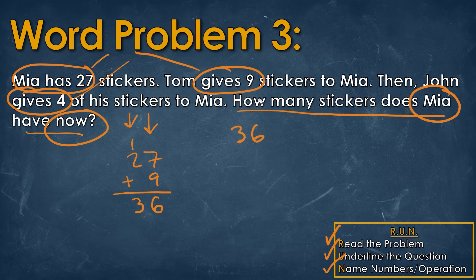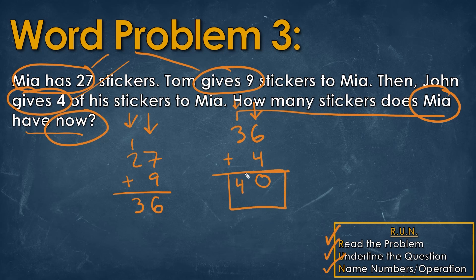Then when John gives 4 additional stickers, we're going to add that 4 to 36. We always start with the right — 6 plus 4 is going to be 10. So that's a 0 right here and we put the 1 at the top for that 10. Then we add from the next column: 1 plus 3, which is going to be 4. So our answer is 40.